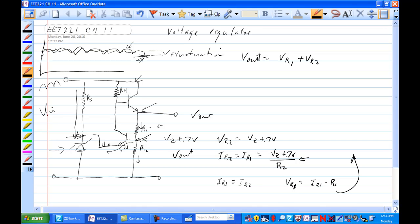If this voltage increases here, the current through R1 would increase. Current through R2 would not, because it's set up by this Zener, this plus 0.7 volts. So we have a constant voltage here.